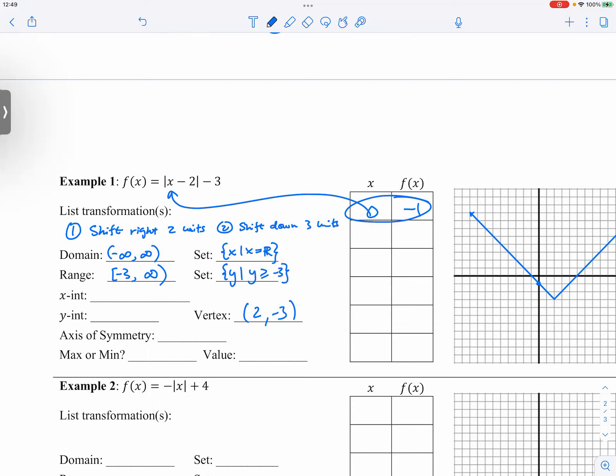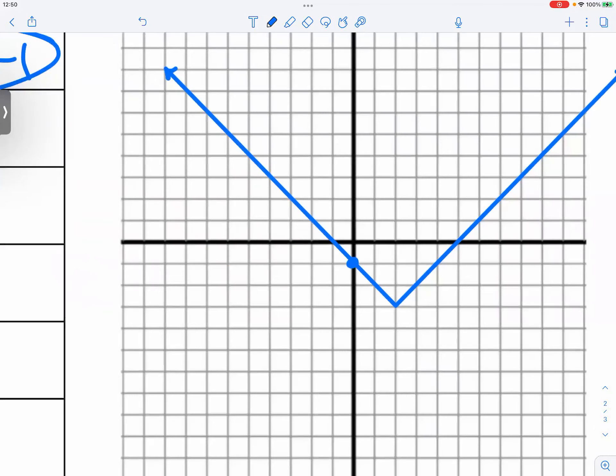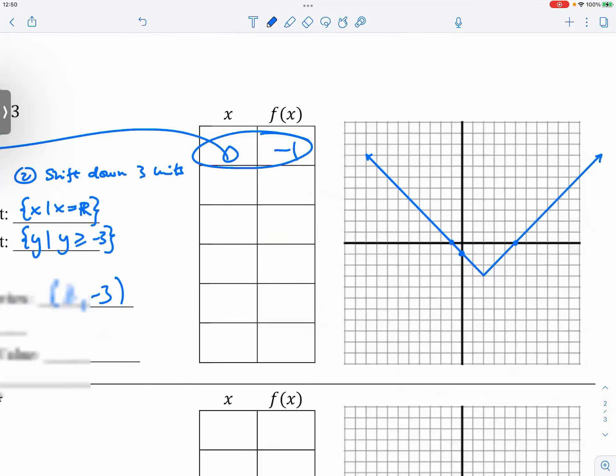Now the slope, if there is no vertical or horizontal stretch or shrink, the slope should maintain as one and negative one. And that should make your telling of x-intercepts and y-intercepts very very straightforward.